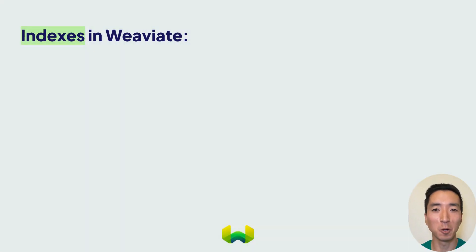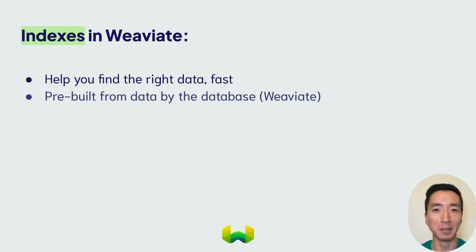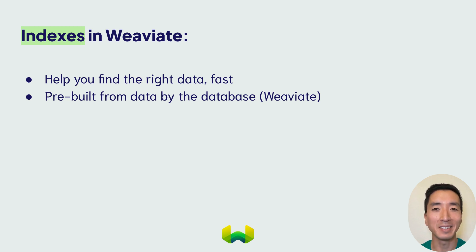First, let's talk about indexes. Indexes exist to help you find the right data faster. They are pre-built and maintained from your data to do this. What this means is that when a query comes in, the system doesn't need to look through every data object, which can take a long time. Instead, it can simply look through the appropriate index to find the right data objects.